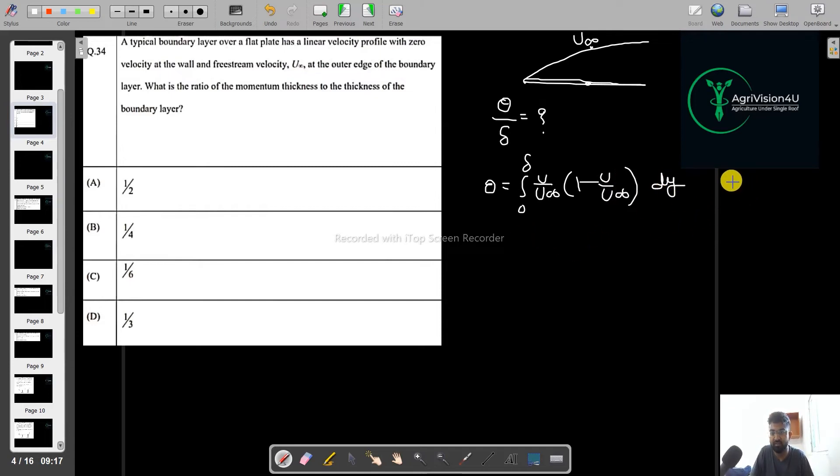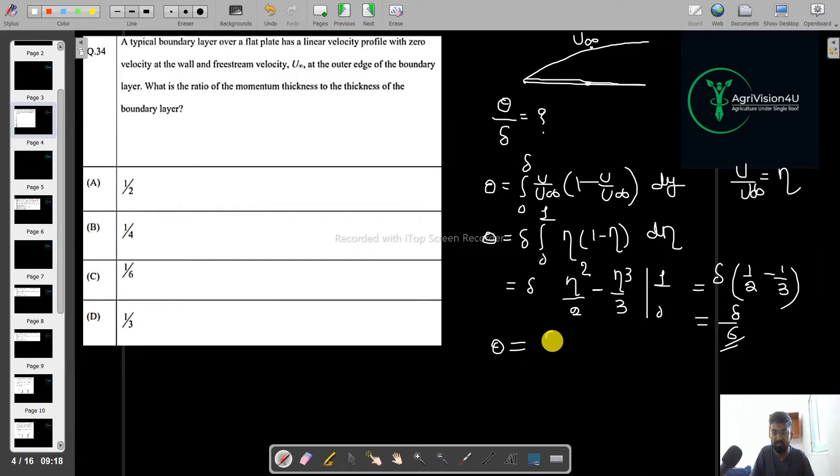So we can directly use. For this simplicity, what I am doing, I will just substitute u by u infinity as eta. If you solve this particular equation, then you will get delta by 6. So theta equals delta by 6, so theta by delta equals 1 by 6. So straight forward, you will get the option C as your answer.